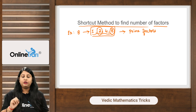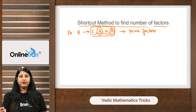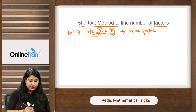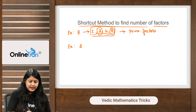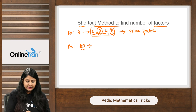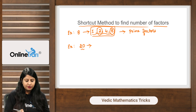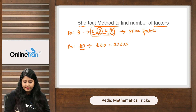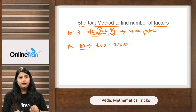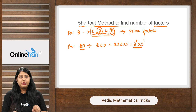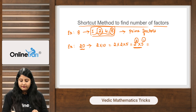Now, how do we find the total number of factors when a big number is given? Let me explain the technique with a simple number first. Take 20. Instead of listing out its factors, split 20 into prime factors: 20 = 2 × 10 = 2 × 2 × 5 = 2² × 5¹.